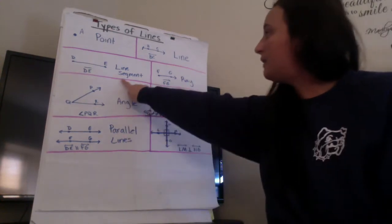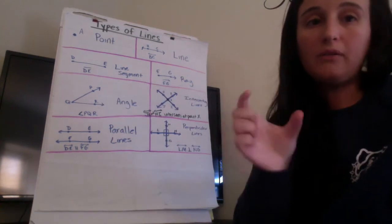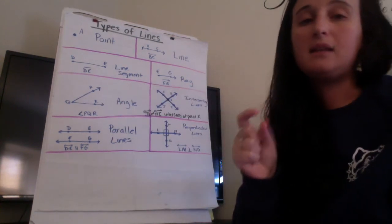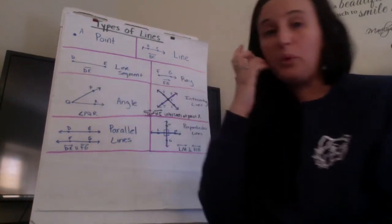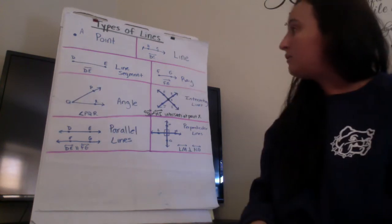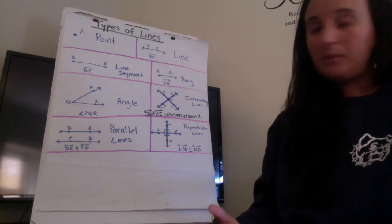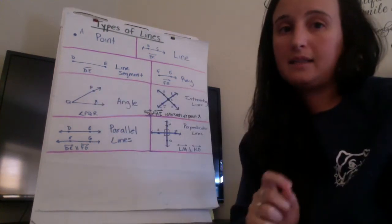Over here we have a line segment so if you remember a line segment is just a part of a line, it's just a section of it. It's not the entire line because you'll notice that a line segment has end points. It doesn't have arrows that go on and on and if I were to name this line segment I would call this line segment DE because those are the points located for that line segment.